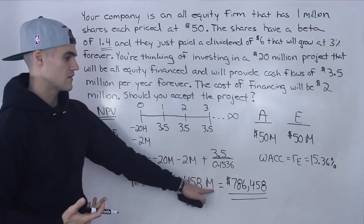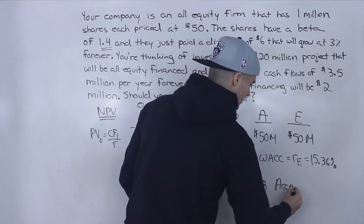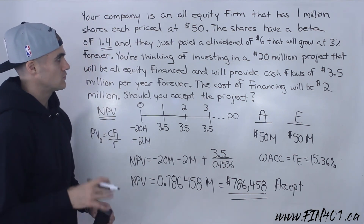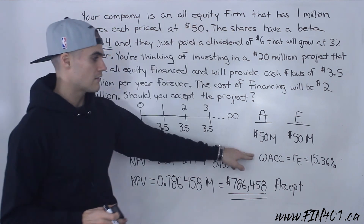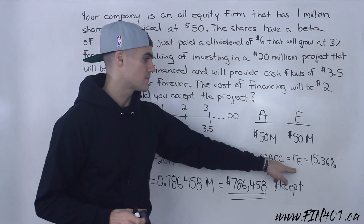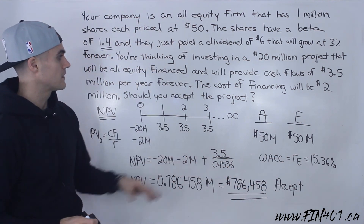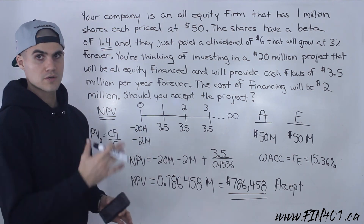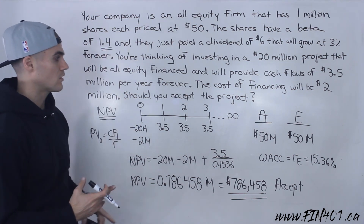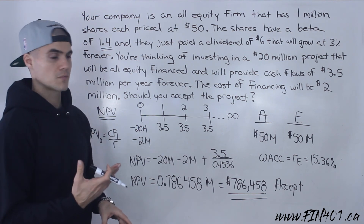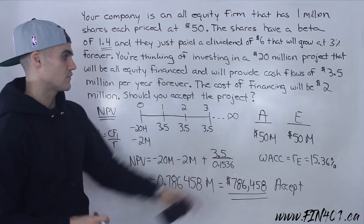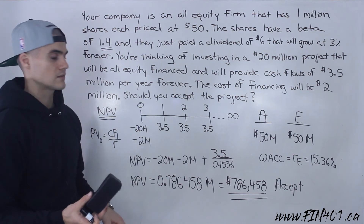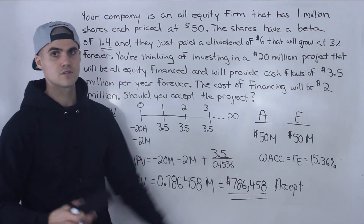Because the NPV is positive, you should accept the project. Key takeaways: for an all-equity firm, WACC equals RE. We couldn't use CAPM due to missing information, so we used the dividend discount model to find RE = 15.36%. We then used that rate to discount the perpetuity cash flows and computed a positive NPV, leading to the accept decision.